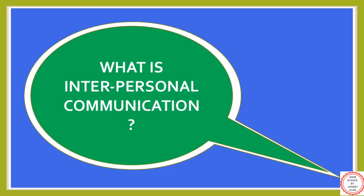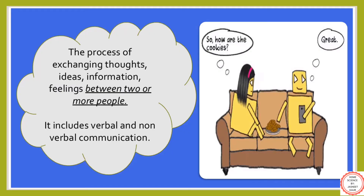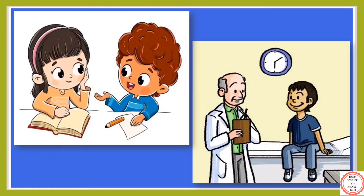Next is interpersonal communication. Students, understand the difference between intrapersonal and interpersonal carefully, because most of you commit mistakes by interchanging their meanings. Interpersonal communication is a type of communication which allows the exchange of thoughts, ideas, and information between two or more people. It can be done verbally or through gestures, facial expressions, eye contact, etc. Examples include interacting with a family member, talking to a classmate, or interaction between a doctor and patient.